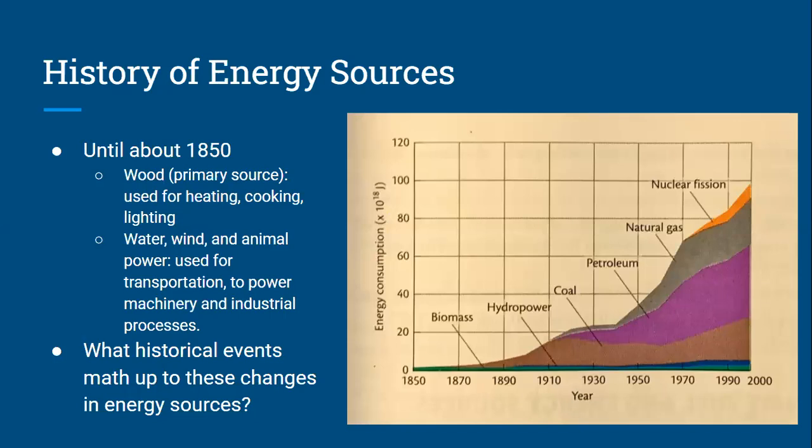A little history of energy sources: until about 1850, our primary source was wood, and we used it for heating, cooking, and lighting. Water, wind, and animal power were used for transportation and to power machinery and industrial processes — imagine a horse pulling a carriage, or wind pushing a sail to move a boat. Think about the historical events that match up to the changes in energy sources on the graph to the right.